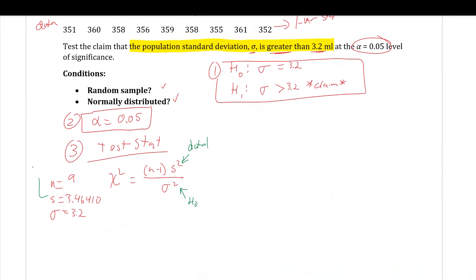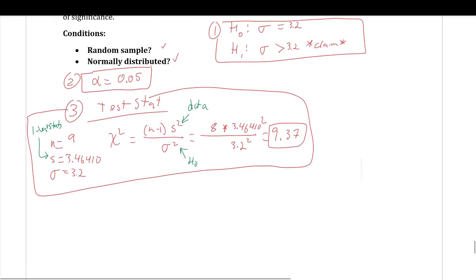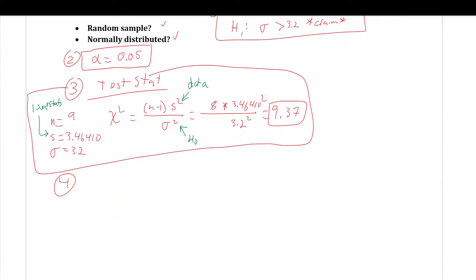In step four, we draw the chi-squared picture. Chi-squares are not symmetrical and not bell-shaped. We have a vertical axis and a horizontal axis starting from zero. This is a right-tail test. For placing the test statistic: if s is greater than sigma, draw the test statistic to the right of the peak; if s is less than sigma, draw it to the left of the peak. This is because the test statistic is a ratio — if s is much larger than sigma, the ratio is much larger and further from zero.